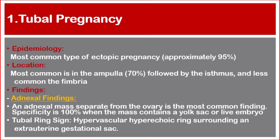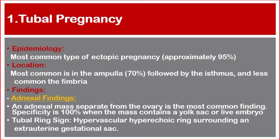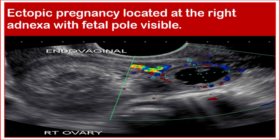Number one: tubal pregnancy. Epidemiology — it is the most common type of ectopic pregnancy, about 95 percent. Location: most common is in the ampulla at 70 percent, followed by the isthmus, and less common in the fimbria. Findings: an adnexal mass separate from the ovary is the most common finding.